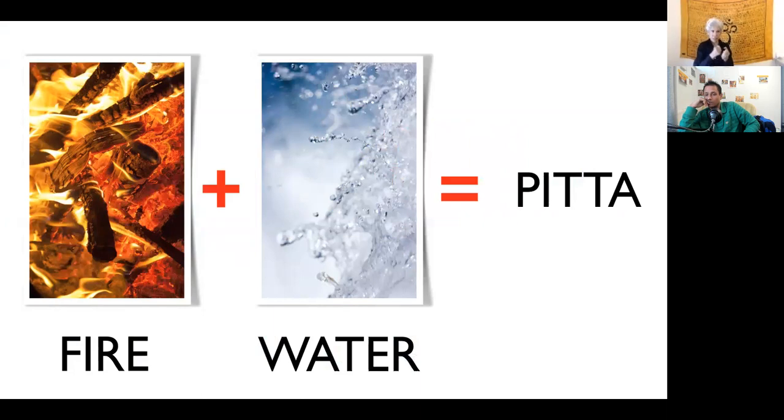Mars rules Aries, and then you have Mercury. Remember, tridosha Mercury also has a component of pitta - to be able to distinctly speak the words, to transmit the message. It's closest to the Sun. So those are basically your pitta grahas, your pitta planets.